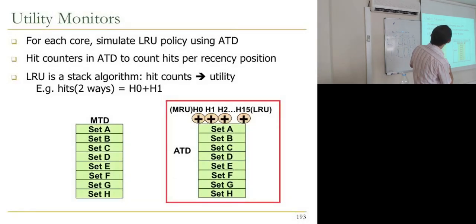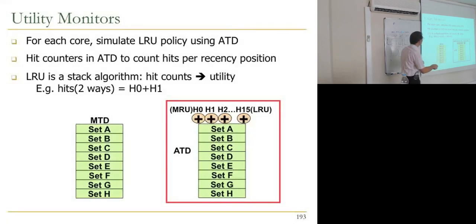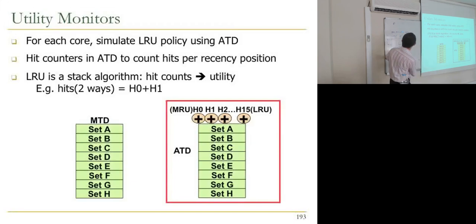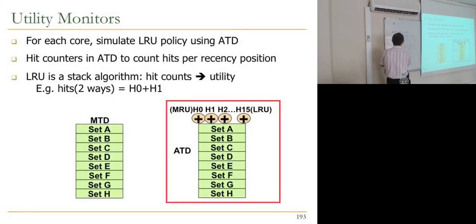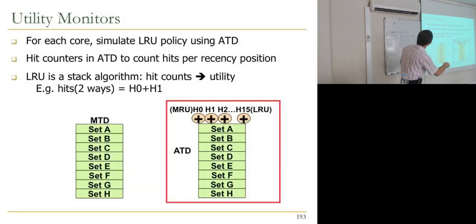How do utility monitors actually work? For each core, we simulate LRU policy using an auxiliary tag directory — another tag directory with hit counters for each way. If you allocate zero ways you get some hits, two ways you get some hits, three ways you get some hits. We keep hit counters for each way as we allocate.